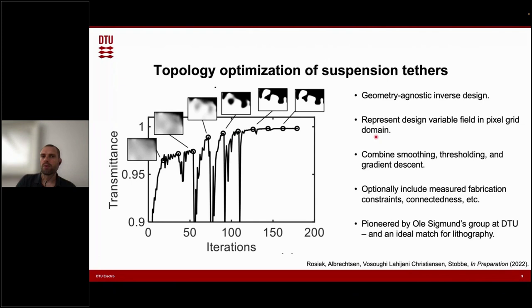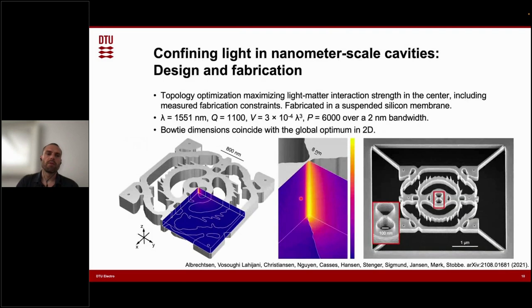But it has this particularly ideal match with nanolithography, or you could say more broadly, with subtractive and additive manufacturing, in our case subtractive. And one of the things we can do, which very few people do, is that we can include measured fabrication constraints. In fact, nobody else is really doing that. And that is important because sometimes inverse design just gives you a crazy structure. It looks beautiful. But you cannot build it, which is not so relevant.